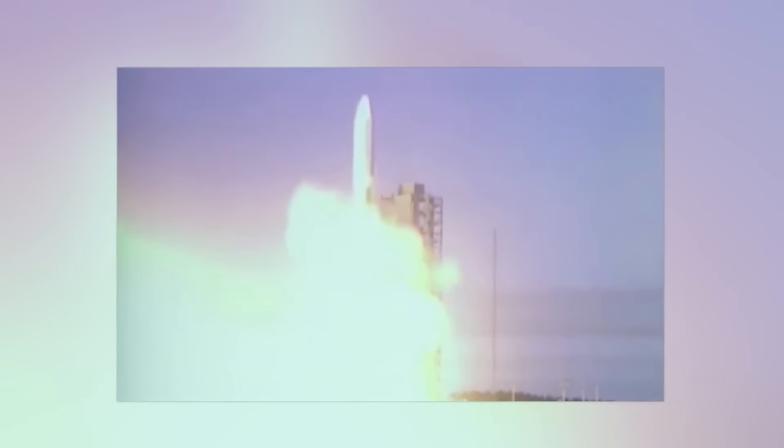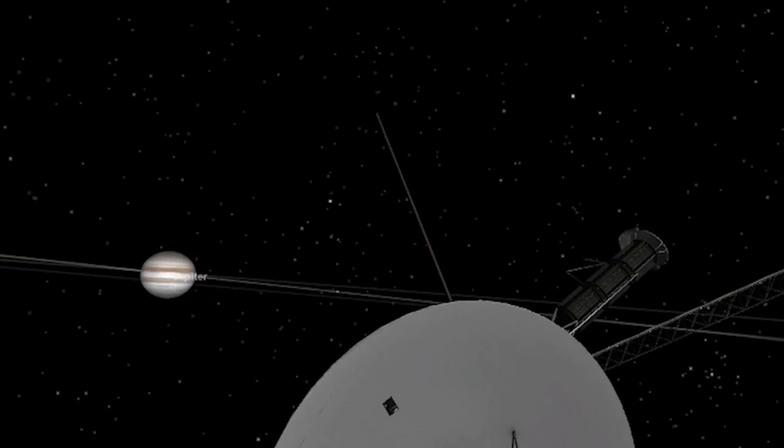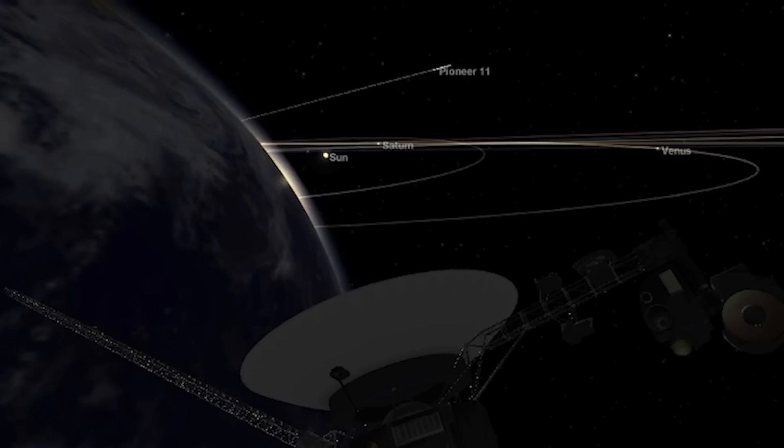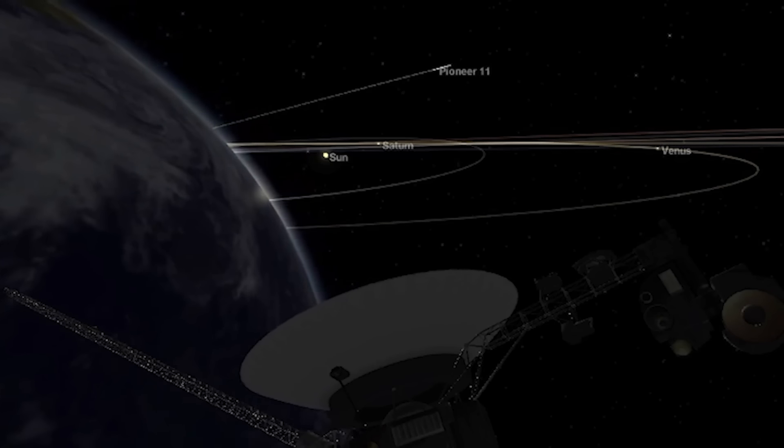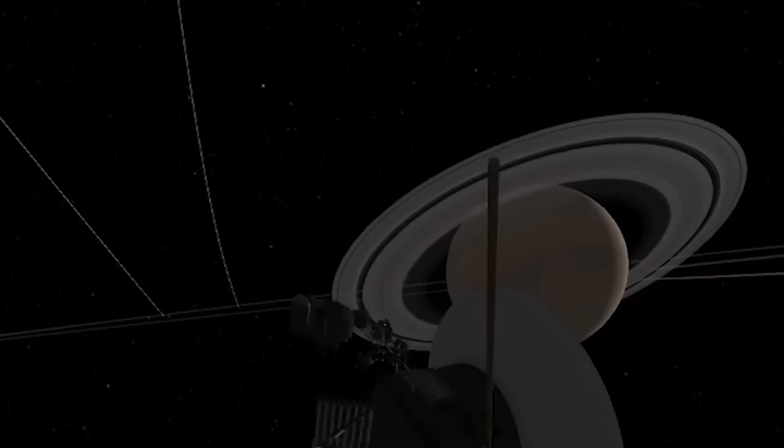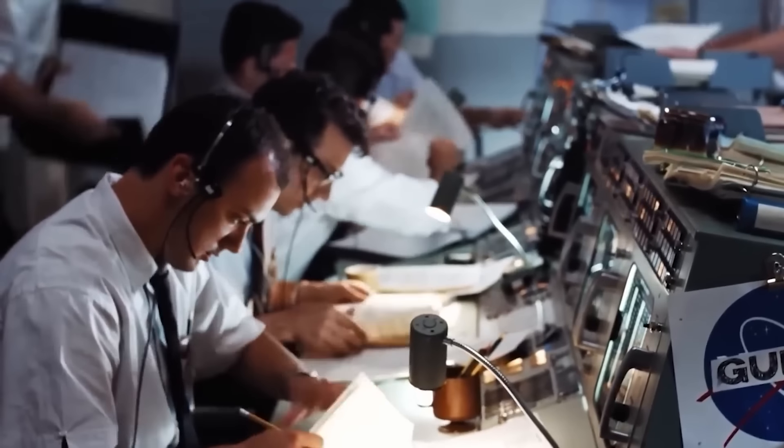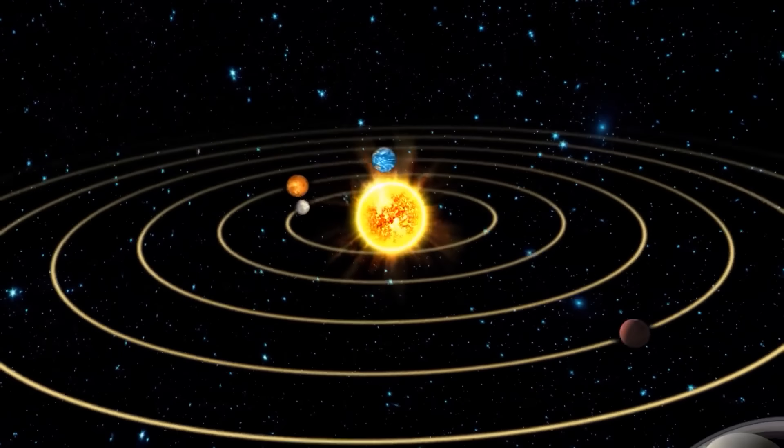The Voyagers were launched in a trajectory that would align them with the outer planets, allowing them to use their gravity to slingshot themselves from one planet to the next. It was a risky gamble, but one that paid off handsomely. As the Voyagers approached each planet, they sent back stunning images and scientific data that revolutionized our understanding of the solar system.